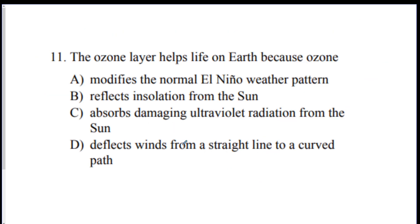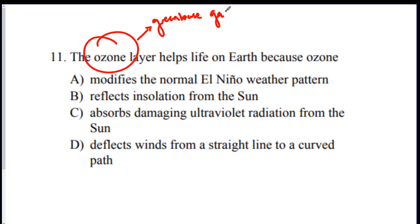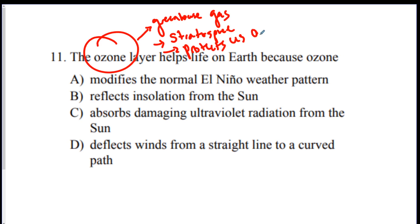Question 11 — the ozone layer: three things you should know. Number one: it's a greenhouse gas that traps heat. Number two: it's located in the stratosphere. Number three: it protects us by absorbing harmful UV radiation, which is what gives us sunburn. The answer is C.